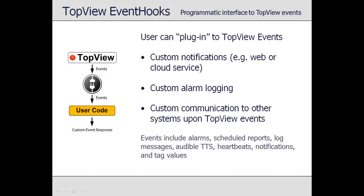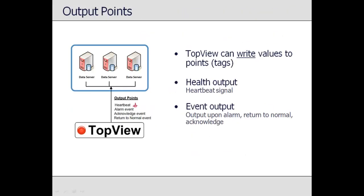Delivered Top View events include alarm information, logging, audible alarms, notifications, and tag values. Although the monitoring function of Top View reads points from the underlying data source, Top View can also write values to points. Top View's heartbeat signal can send a pulse or sawtooth wave to a point in the underlying system, allowing a backup or failover instance to monitor the health of the primary. Event output points can send signals about Top View events to the underlying system — used to synchronize acknowledgments, hysterize events, or feed other systems monitoring Top View alarm events.